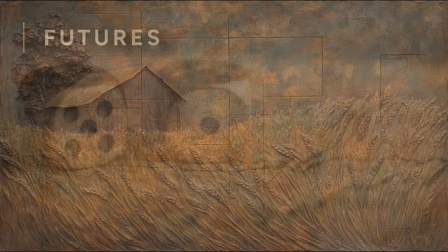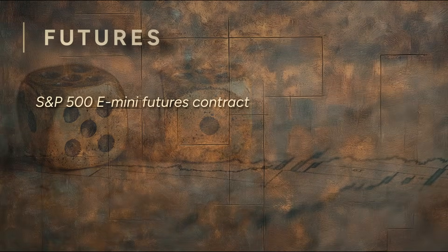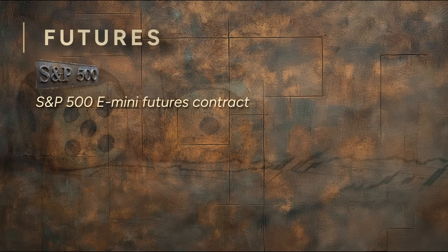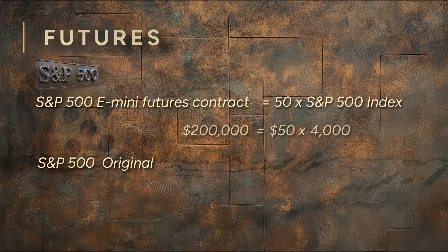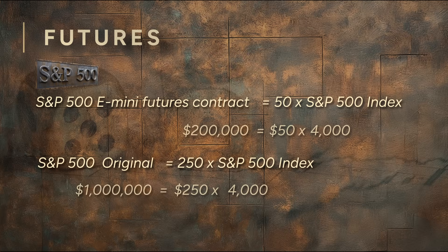Futures aren't just for wheat — they work in stock markets too. Take the S&P 500 E-mini futures contract. It tracks the S&P 500 index without you buying all those stocks. Each contract is worth 50 times the index value, so if the index is at 4,000, that's $200,000. You control that much without putting up the full amount. The original S&P 500 futures contract was much larger — worth 250 times the index value, or $1 million at 4,000 points. The E-mini at 50 times the index is one-fifth the size, making futures trading accessible for more investors, not just the big players.